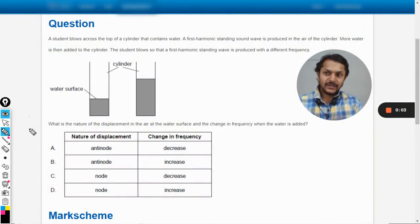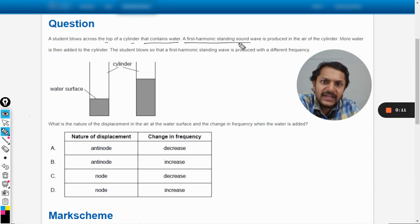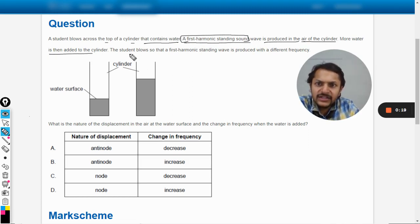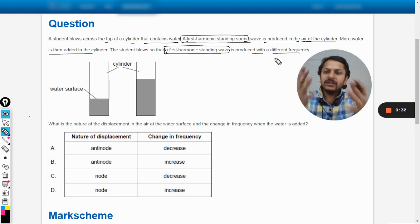Okay, dear students, let us see this question. A student blows across the top of a cylinder that contains water. The first harmonic standing wave is produced in the air in the cylinder. More water is then added. The student blows so that another first harmonic standing wave is again produced with a different frequency.